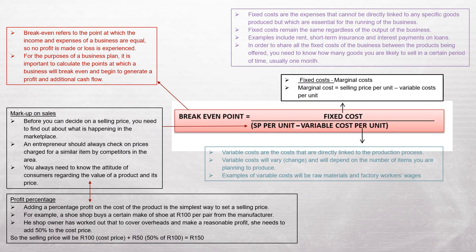Break-even point is calculated by dividing fixed costs by the profit margin per product. Profit margin is calculated as selling price per unit minus variable costs per unit. The break-even point refers to the point at which the income and expenses of a business are equal — no profit is made and no loss is experienced. For a business plan, it is important to calculate the point at which a business will break even and begin to generate a profit.